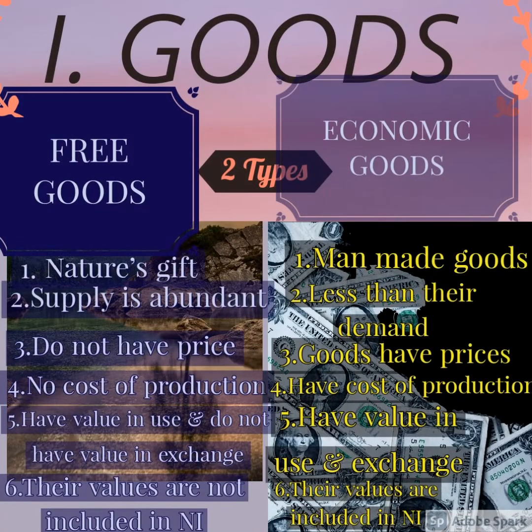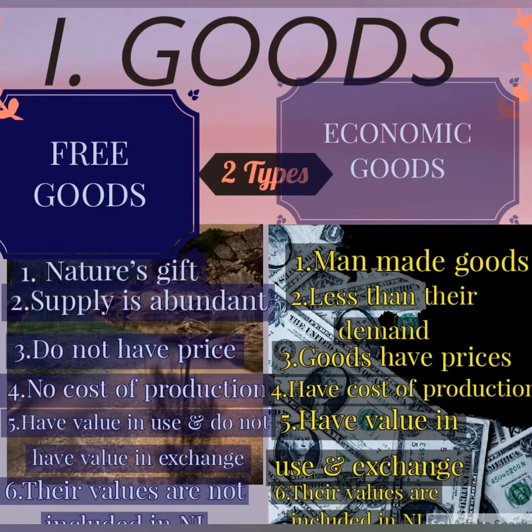Goods: all tangible things that satisfy human wants are called goods. Goods can be divided into two types — free goods and economic goods. Free goods are nature's gift; economic goods are man-made. Free goods supply is abundant, whereas supply is always less than demand in economic goods. Free goods do not have a price, while economic goods have a price. Free goods have no cost of production, but economic goods have a cost of production.